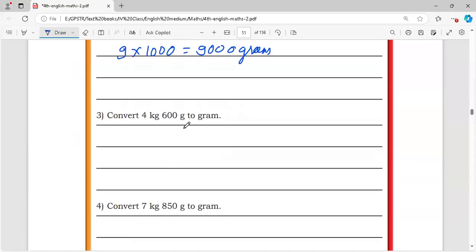Convert 4 kg 600 gram to gram. We know that 1 kg is equal to 1000 grams. Therefore, 4 kg is equal to 4000 grams. 4 kg 600 gram is equal to 4600 grams.